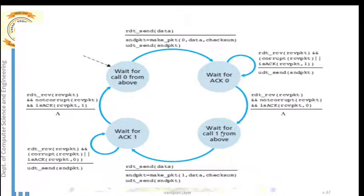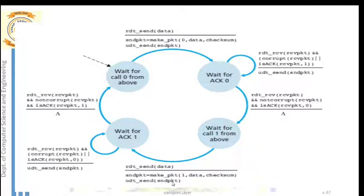In the next state, the sender waits for call 1 from above — a new packet with sequence number 1. The same process applies: add sequence number 1 to indicate it is the second packet, add a checksum for error detection, send the packet, and then go to the new state waiting for the acknowledgement for this packet.